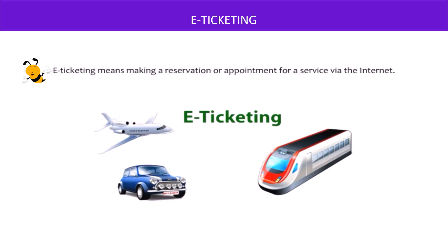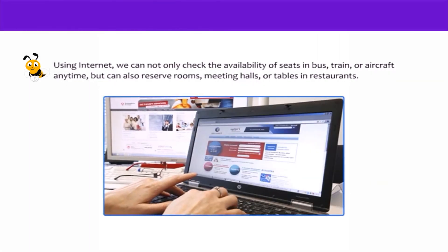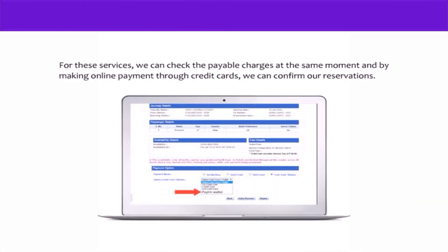In non-transactional e-banking, a customer can perform non-transactional tasks such as simply viewing the account balance, ordering checkbooks, etc. Now let's talk about e-ticketing. E-ticketing means making a reservation or appointment for a service via the internet. Using the internet, you can not only check the availability of seats in a bus, train, or aircraft anytime, but can also reserve rooms, meeting halls, or tables in restaurants. You can also check the charges you need to pay at the same moment.